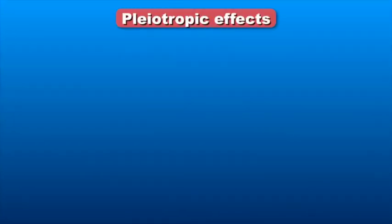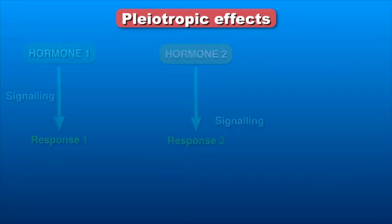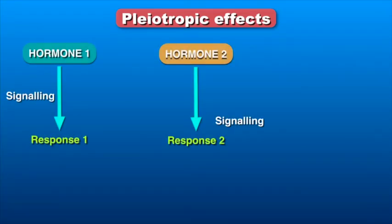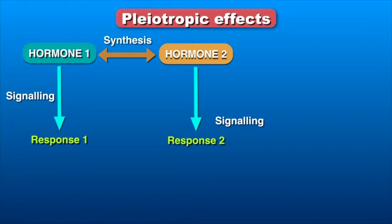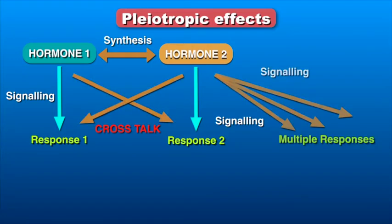Most hormones show pleiotropic effects, i.e., they can simultaneously influence a number of diverse processes. They do so either by influencing the synthesis of one another or due to crosstalk in their signaling pathways.